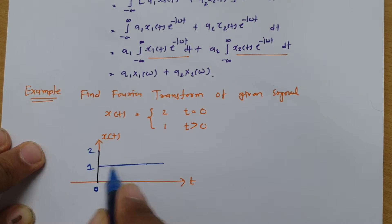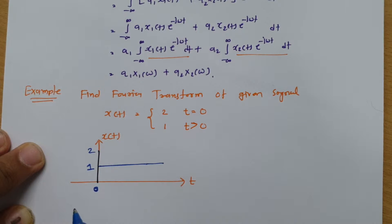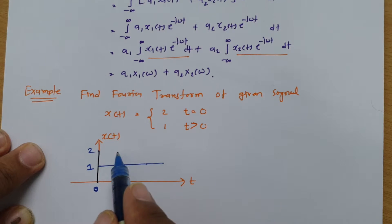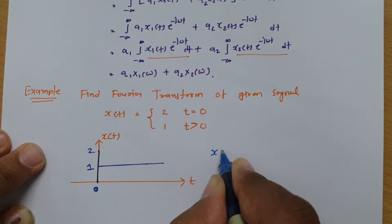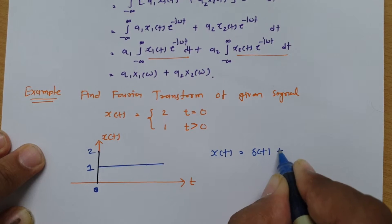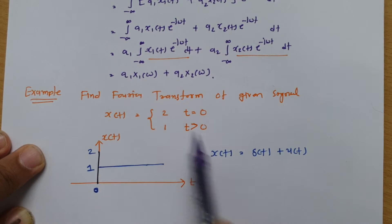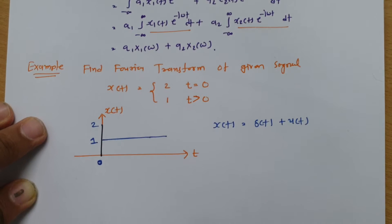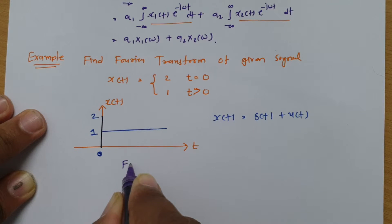One can clearly see this is a step signal, and if you add one impulse, the addition of the step signal and impulse results in this x(t). Based on this graphical representation, the given signal is the addition of a step signal and an impulse signal at t = 0. So we can say x(t) = δ(t) + u(t). Now we need to solve the Fourier transform of this x(t).